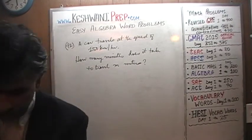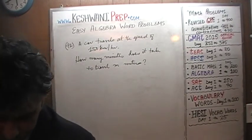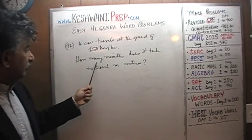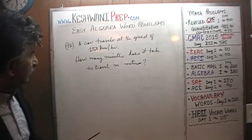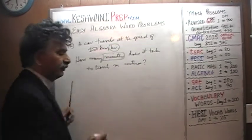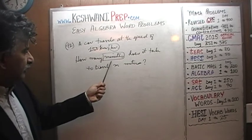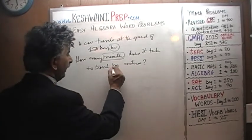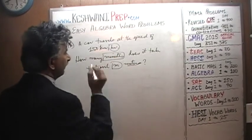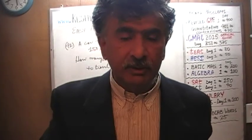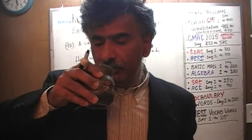One more time: we are told that we are going at the speed of 150 kilometers per hour. The question is how many minutes — so that's the first thing we should notice. The speed is given in terms of hours, but we are being asked in terms of minutes. We also need to pay attention that the distance is in meters, but the speed is in kilometers — so we'll have to convert.